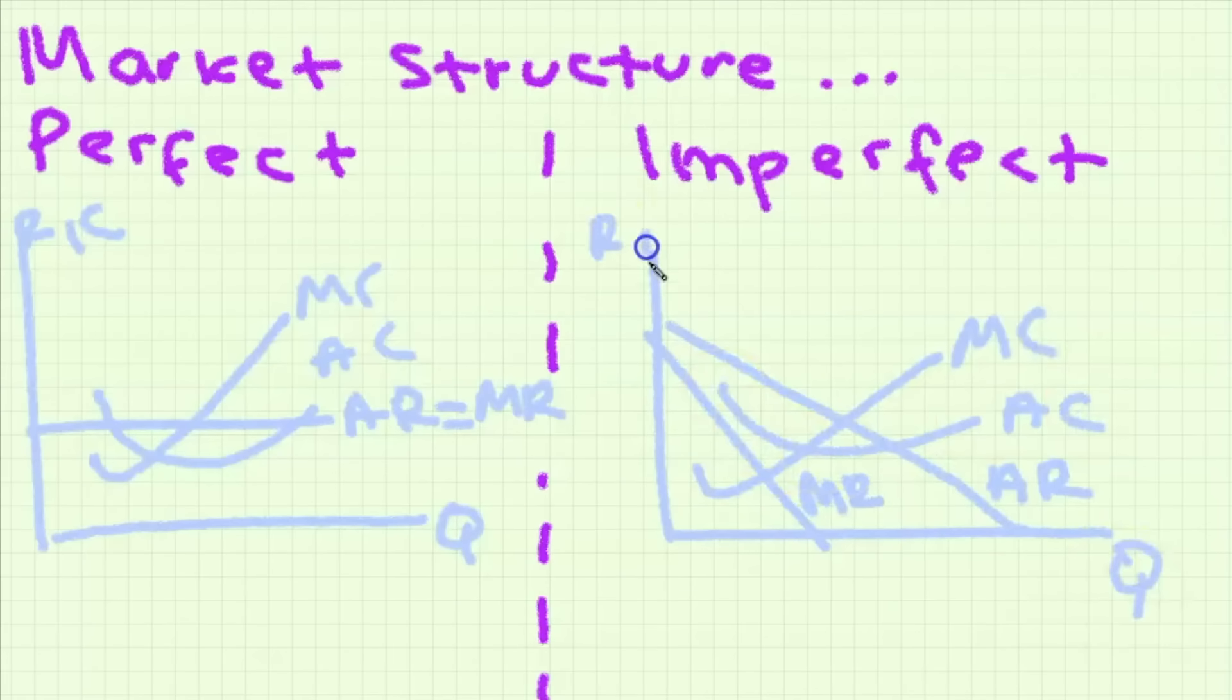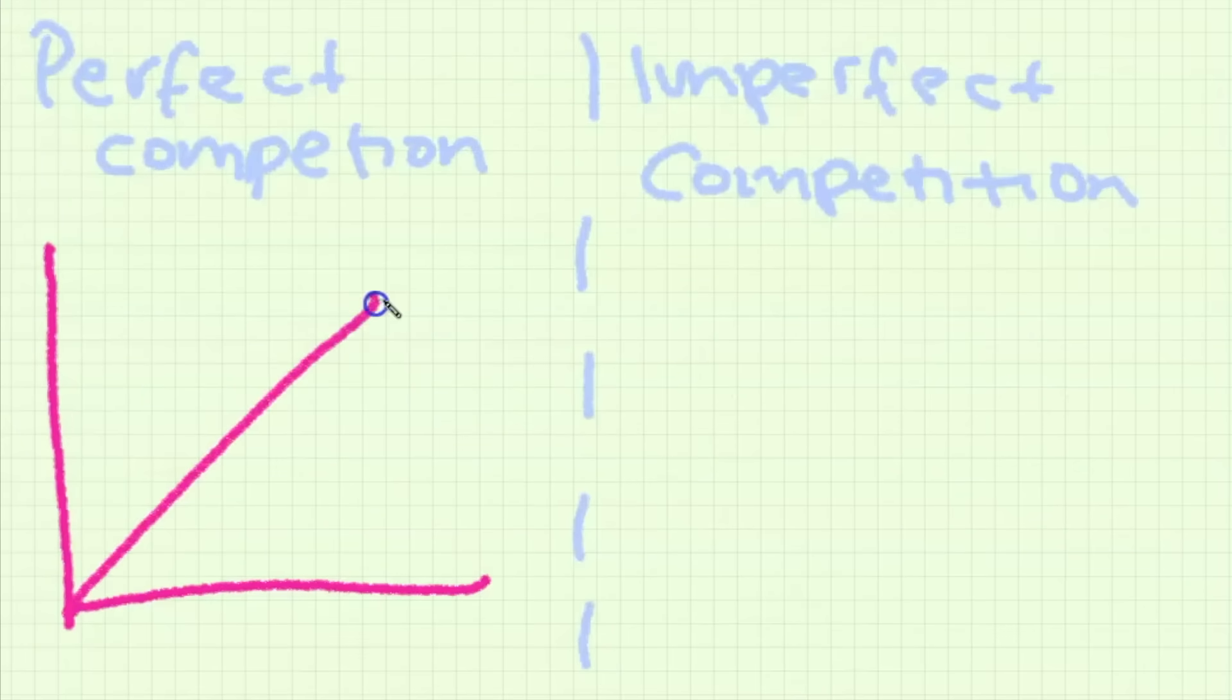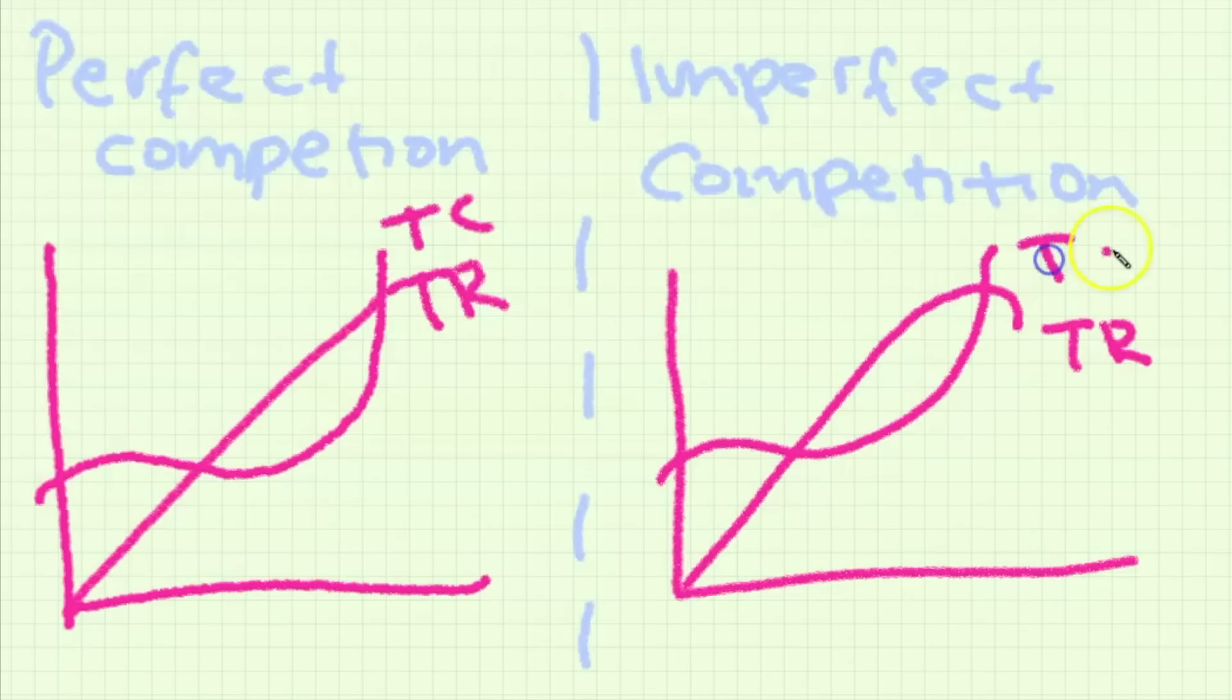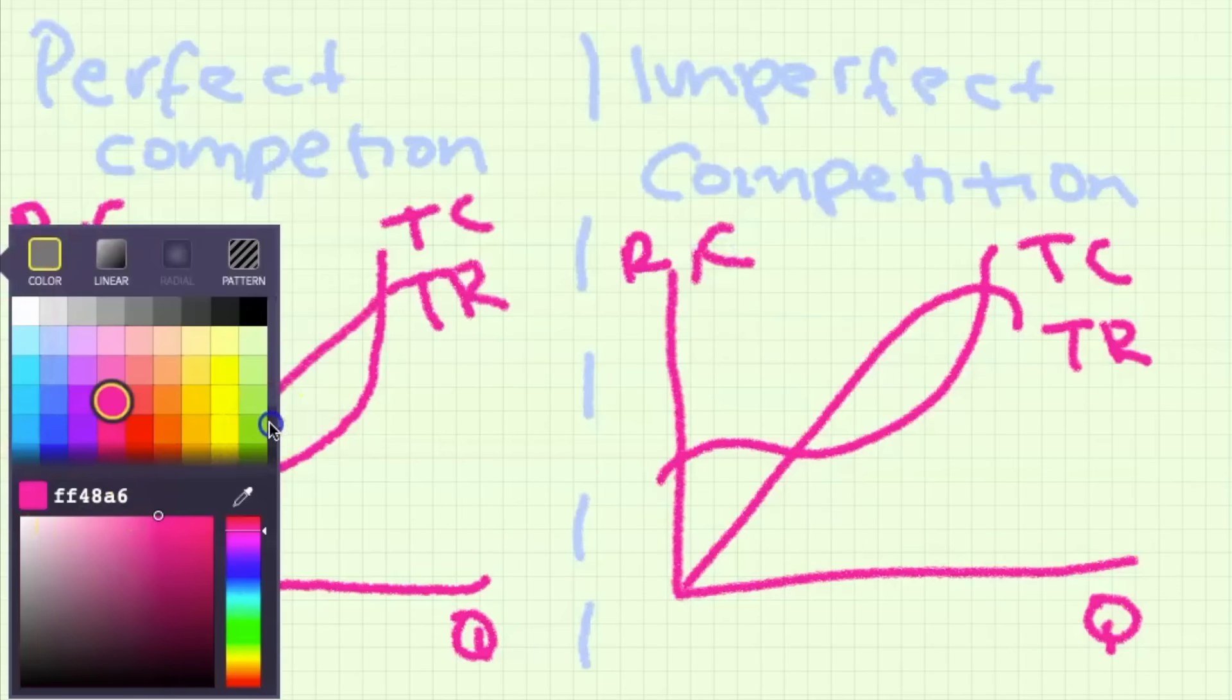For imperfect competition there's MR, AR, AC, MC. In this case again AC is below AR so they are making an abnormal profit. Here we were drawing the average revenue curves, here we draw total revenue curves. For perfect competition total revenue is a straight line curve whereas for imperfect competition it is slightly curved, it's not straight.